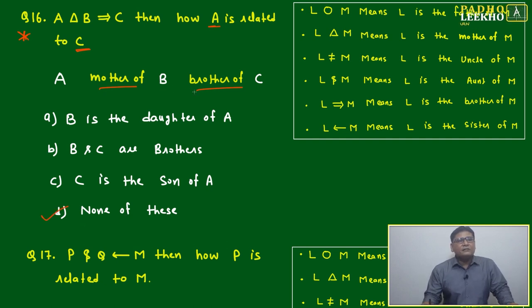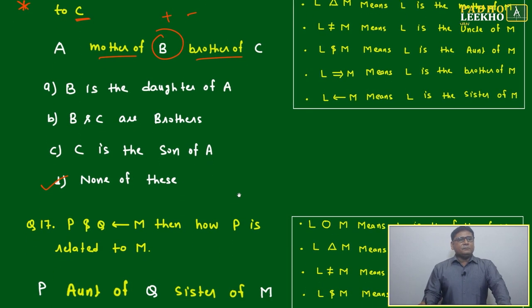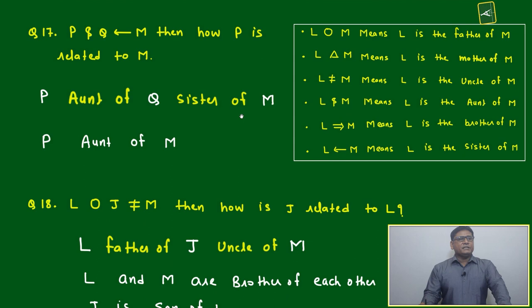Options: B and C are brothers - we don't know about B if it is plus or minus. B is the daughter of A - that is also not clear. C is the son of A - that is also not clear. So the answer is none of these.